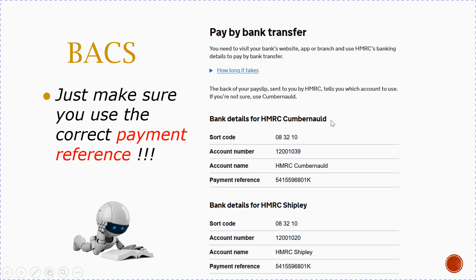Don't use the one on the screen — use the one which would be on your own screen. The bank details shown are for Cumbernauld (account ending in 39) and for Shipley (account ending in 20). Always make sure you use your own payment reference when you log into your account. It's normally ten digits followed by a letter, so eleven characters in total.